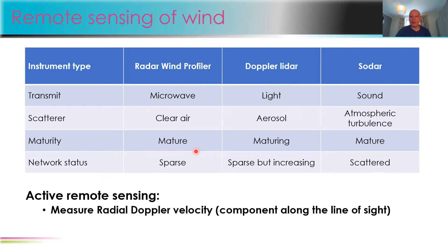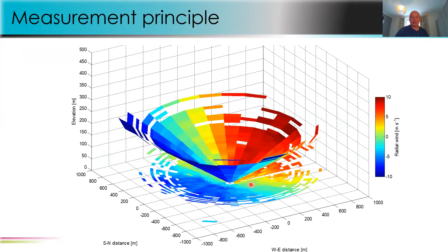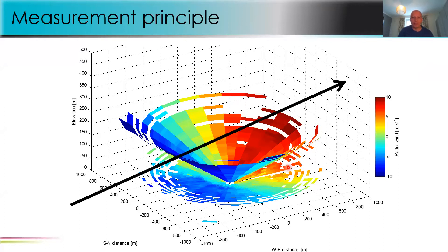Radar wind profilers and SODARs are mature technologies that have been around for some time. Doppler lidars, at least commercially, are relatively new but maturing. These networks are relatively sparse but increasing over time. The main measurement challenge is that you measure along the line of sight but want the horizontal wind component. A 2D horizontal scan shows wind speed varying from negative to positive values, from which wind direction can be identified, but a vertical profile requires scanning.